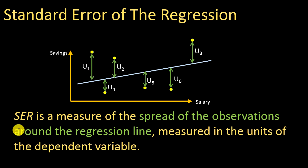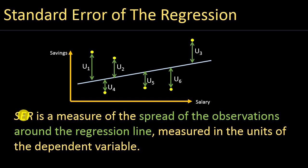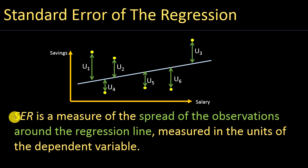The other thing to note is that the standard error of regression is measured in the units of the dependent variable. In this case, if savings are in US dollars, then the standard error of regression will also be in US dollars. Similarly, if your Y values are measuring height in feet, then your standard error of regression will also be in feet — in other words, in the units of the Y value.